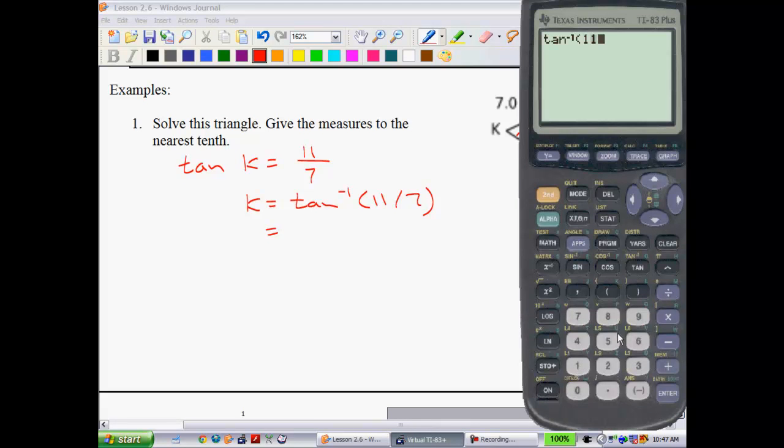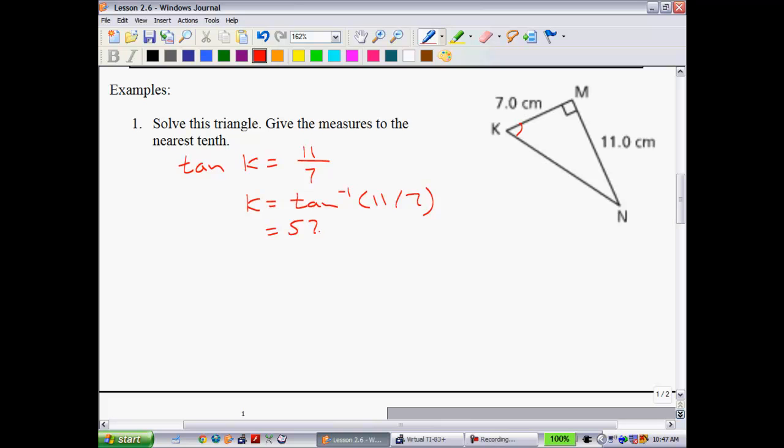I have the tangent of angle K is equal to my opposite, 11, over my adjacent 7. So that tells me that K is going to be equal to the tangent inverse. Remember, you have to use the inverse when you're looking for angles. 11 over 7.